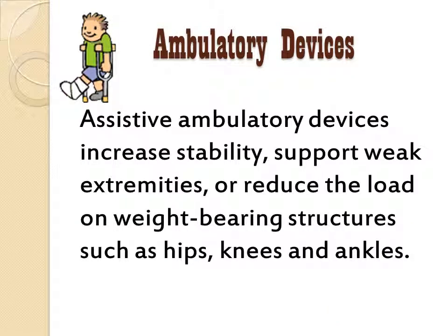Assistive ambulatory devices can include devices such as canes, walkers, crutches, gait belts, mechanical devices, prosthetic limbs, and more.